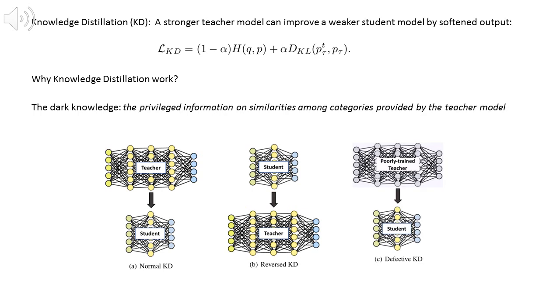Second, we use poorly trained teacher models with very low accuracy to teach student models. Because the weaker students and poorly trained teachers cannot provide reliable similarity information among categories, they should not improve the other models.